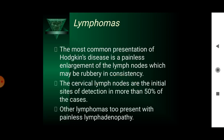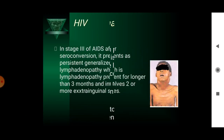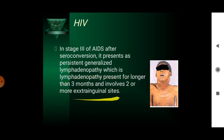Lymphomas: the most common presentation of Hodgkin's lymphoma is painless enlargement of lymph nodes, which may be rubbery in consistency, and the nodes are the initial sites of detection in more than 50% of cases. Other lymphomas also present with painless lymphadenopathy. In HIV, at stage three of AIDS after seroconversion, it presents as persistent generalized lymphadenopathy, present for longer than three months and involving two or more extra-inguinal sites.